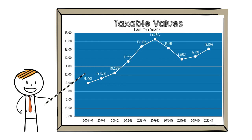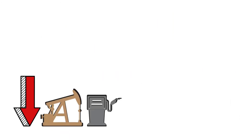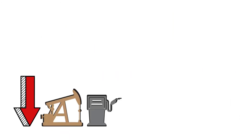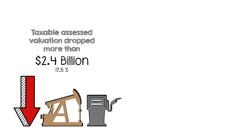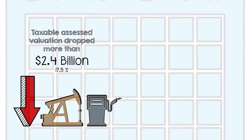A look at the last decade shows a steady increase in taxable values for our district, which meant budget growth with the maintenance and operations tax rate staying at $1.04. You can see the drop: primarily due to lower oil and gas values, ECISD's taxable assessed valuation dropped by more than $2.4 billion — a 17.5% decline — between 2014-15 and 2016-17.